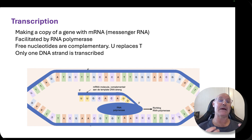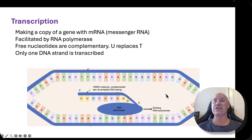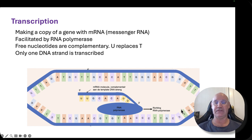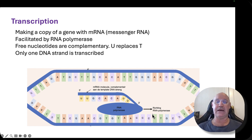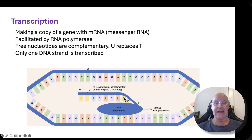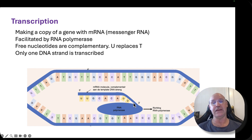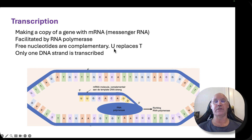Transcription is about making a copy of the gene using mRNA, or messenger RNA. The first thing that needs to happen is for the DNA double helix to unwind and unzip at the location of the gene. That is facilitated by RNA polymerase, which also facilitates the actual making of the mRNA copy by assembling free RNA nucleotides in the appropriate order. The order is complementary, and in RNA, uracil (U) replaces thymine (T), so the complement of A is now U.